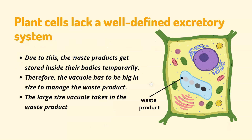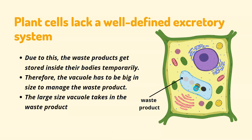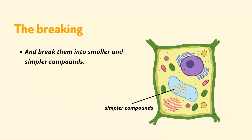The reason is that the plant cell lacks a well-defined excretory system. Due to this, waste products get stored inside their bodies temporarily and sometimes permanently. Therefore, we need a large system that is big enough to manage this waste product. The large vacuole takes in the waste product, breaks it down into smaller and simpler compounds — that is the mechanism the vacuole performs.